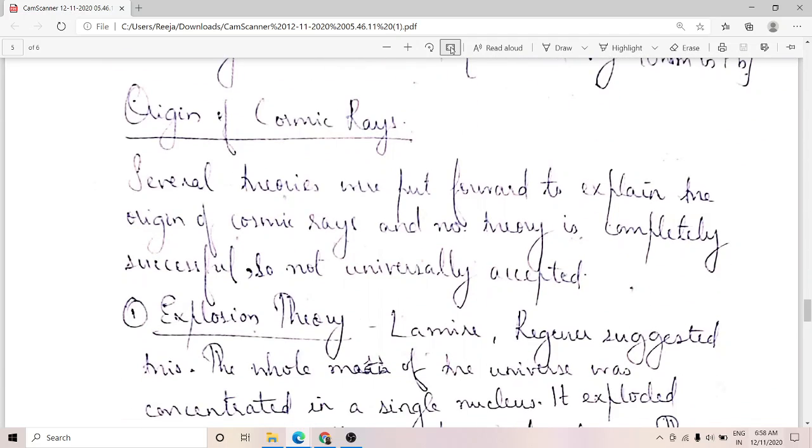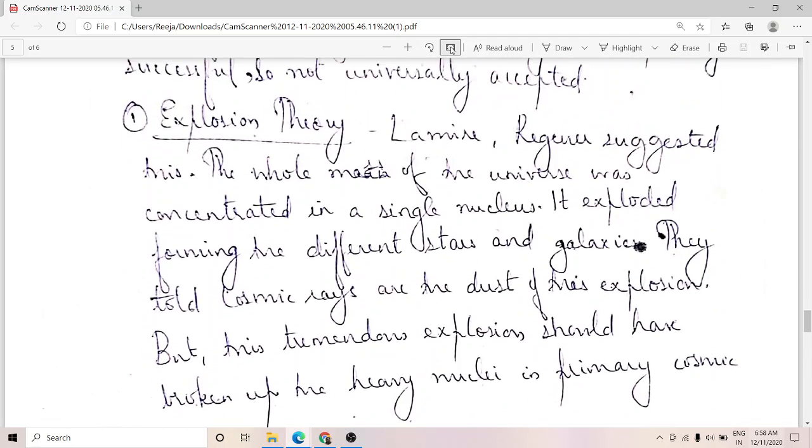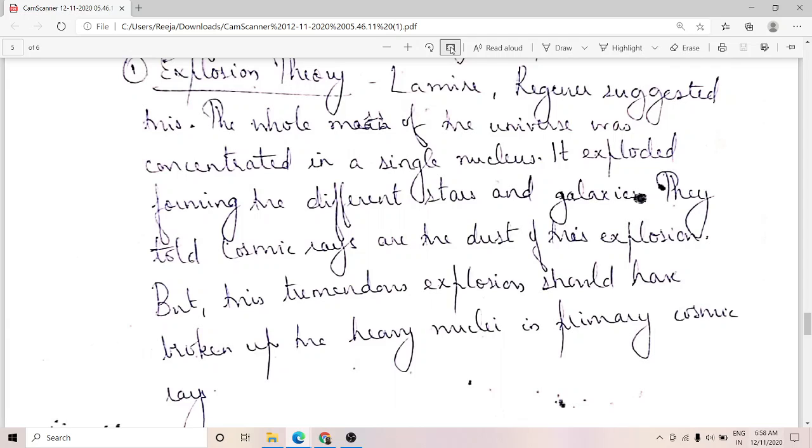There are different theories regarding the origin of cosmic rays but none are completely successful or universally accepted. The first theory is the explosion theory. According to this theory, the whole mass of the universe was concentrated in a single speck and it exploded giving rise to different stars and galaxies. During these explosions, cosmic rays were released and are considered as the dust of this explosion.